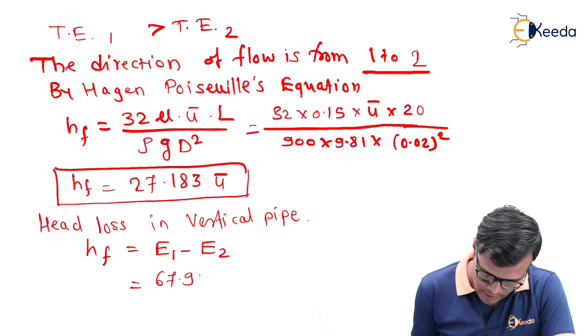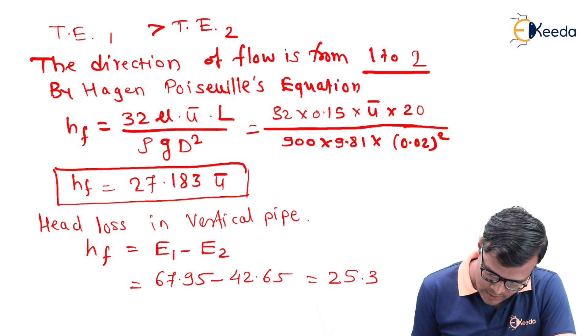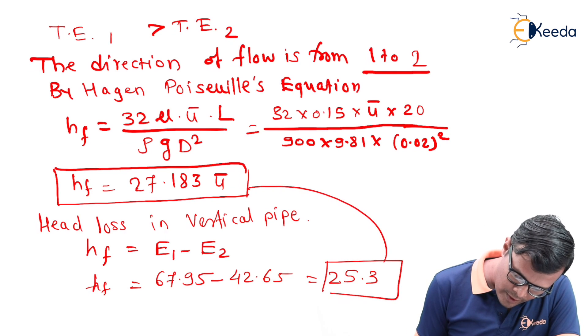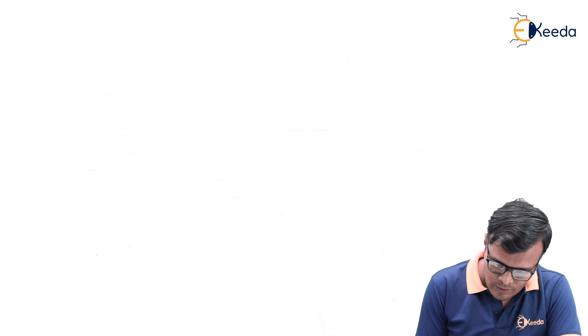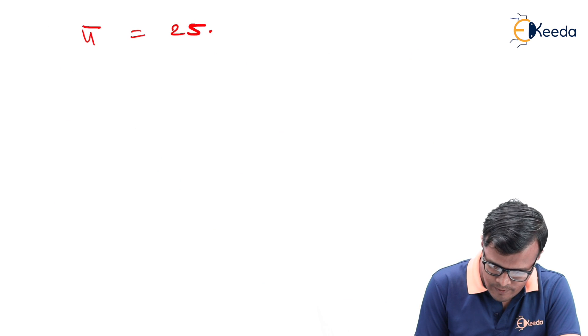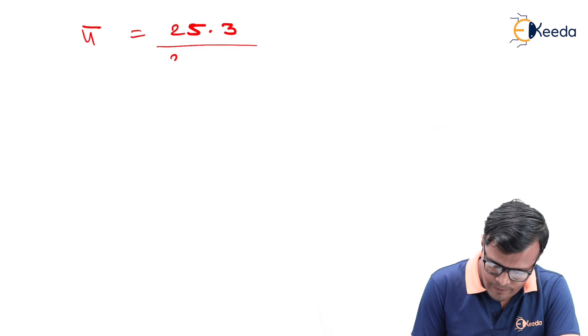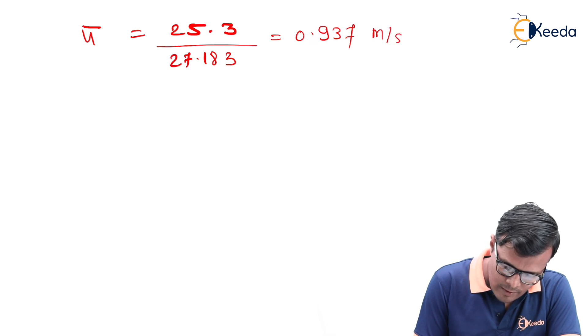67.95 minus 42.65 equals 25.3. This HF when obtained can be put into the equation as shown in the figure. U bar can be calculated as 25.3 divided by 27.183, which equals 0.937 meters per second.